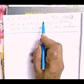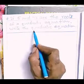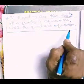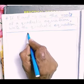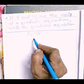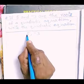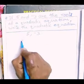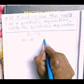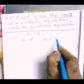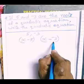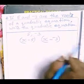If 5 and -3 are the roots of a quadratic equation, write the quadratic equation. Here the roots or solutions are given as 5 and -3. If 5 is a root, then (x - 5) is a factor. If -3 is a solution, the factor is x - (-3), i.e., (x + 3). The product of these two factors equals zero gives the quadratic equation.